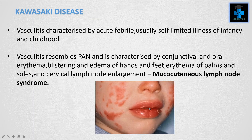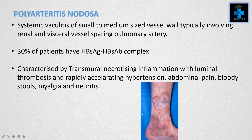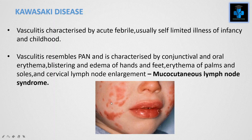Kawasaki disease is a vasculitis characterized by an acute febrile, usually self-limited illness of infancy and childhood. It resembles polyarteritis nodosa and is characterized by conjunctival and oral erythema, blistering and edema of hands and feet, erythema of palms and soles, and cervical lymph node enlargement. Because of all these symptoms, it is also known as mucocutaneous lymph node syndrome.